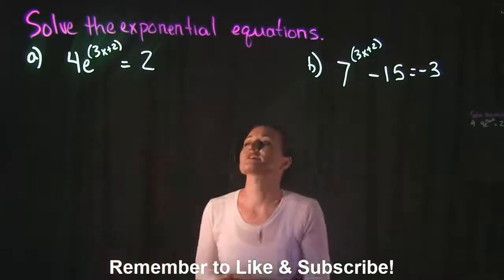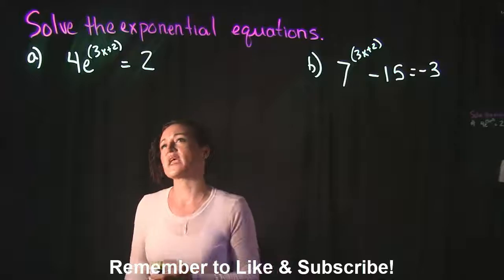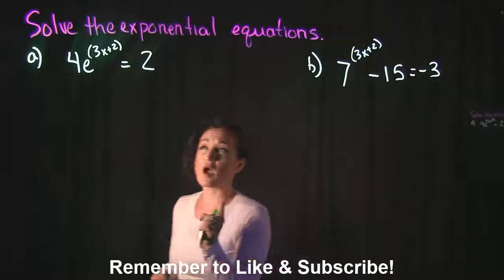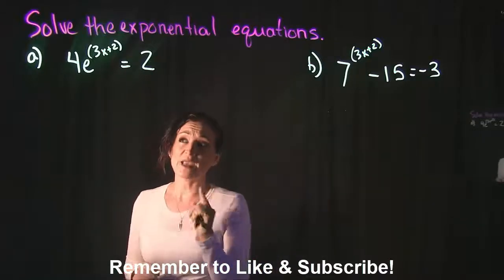Looking at example A, we have 4e^(3x+2) = 2. So the first step for this problem is to get e all by itself.